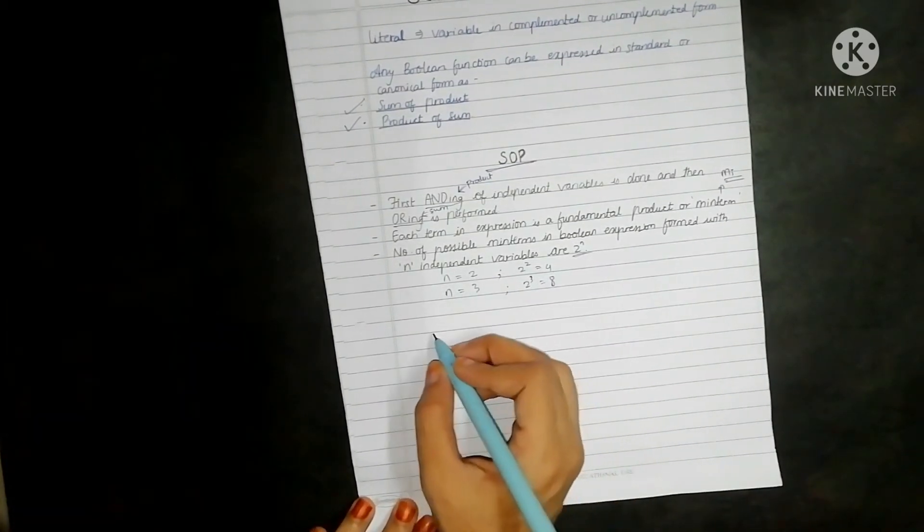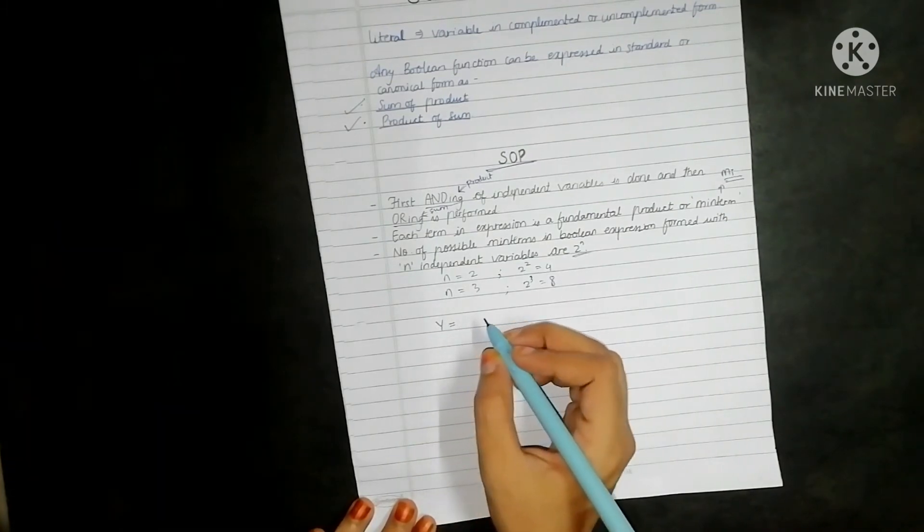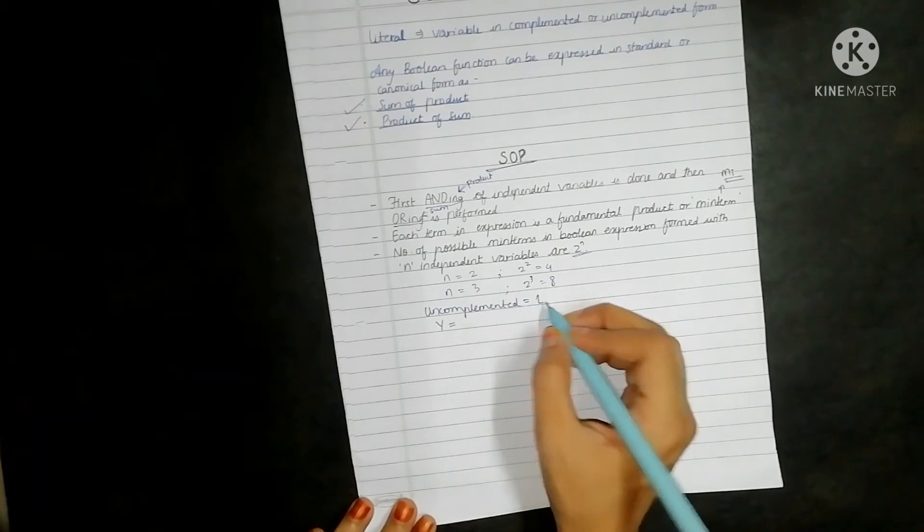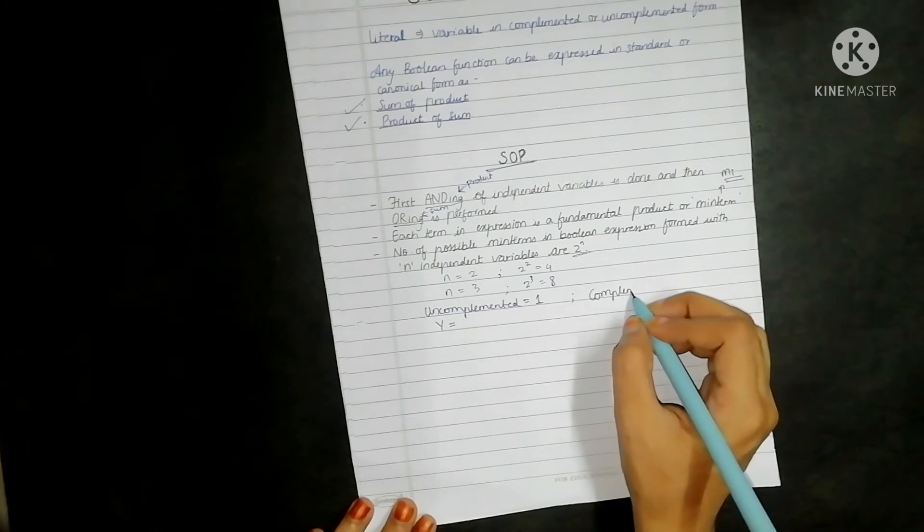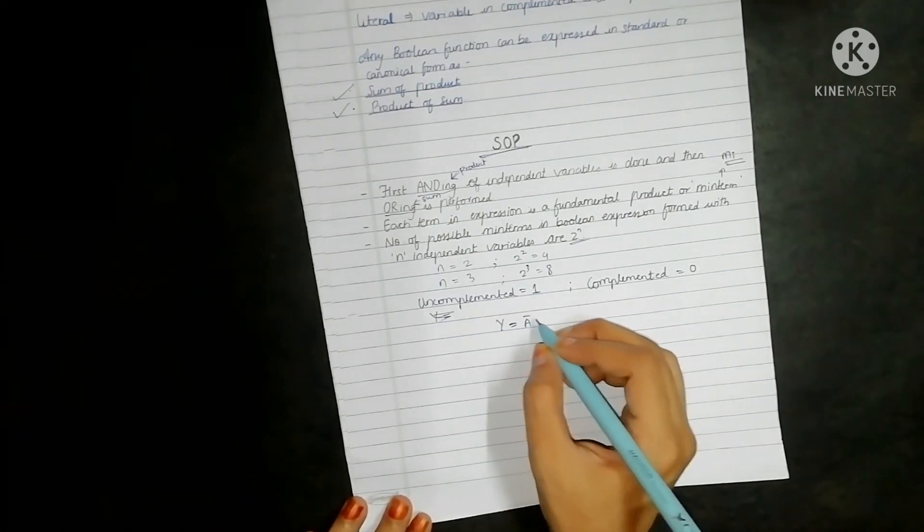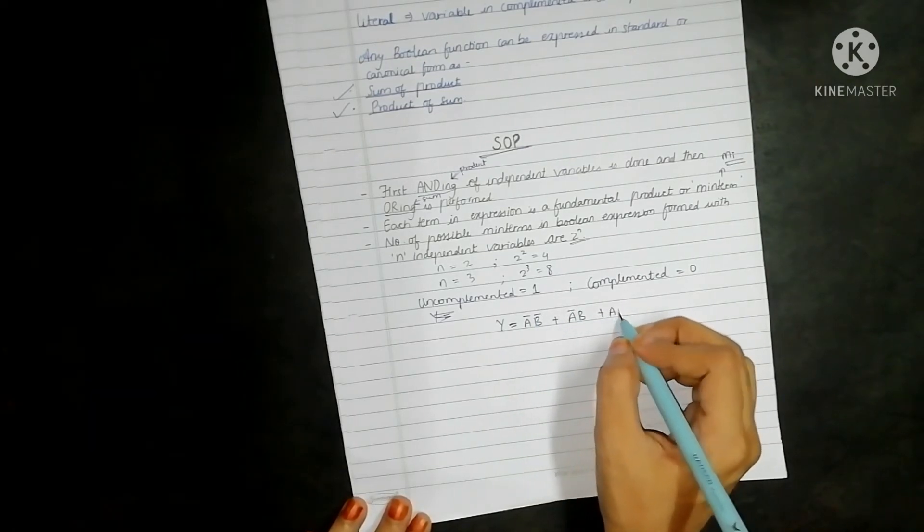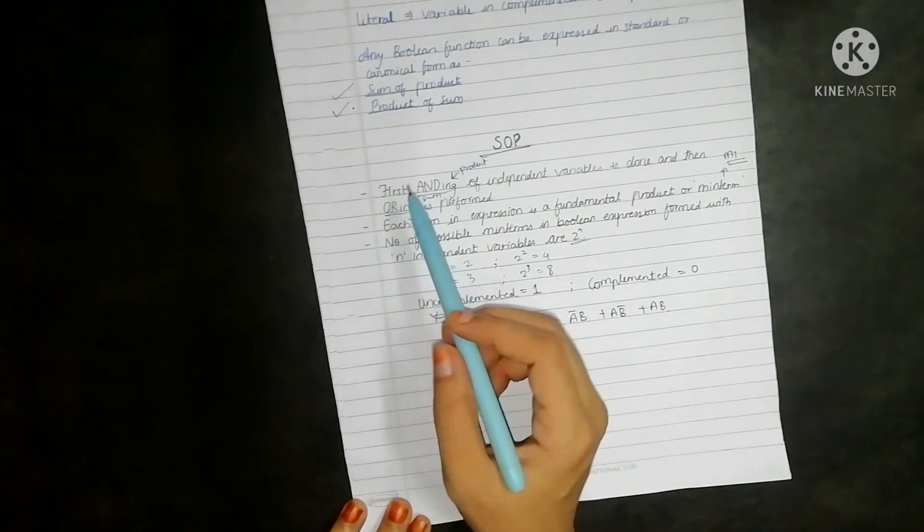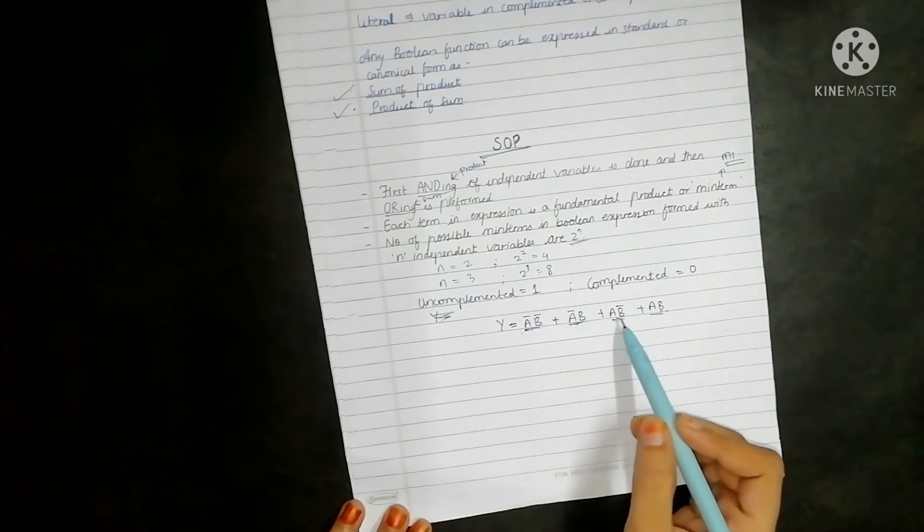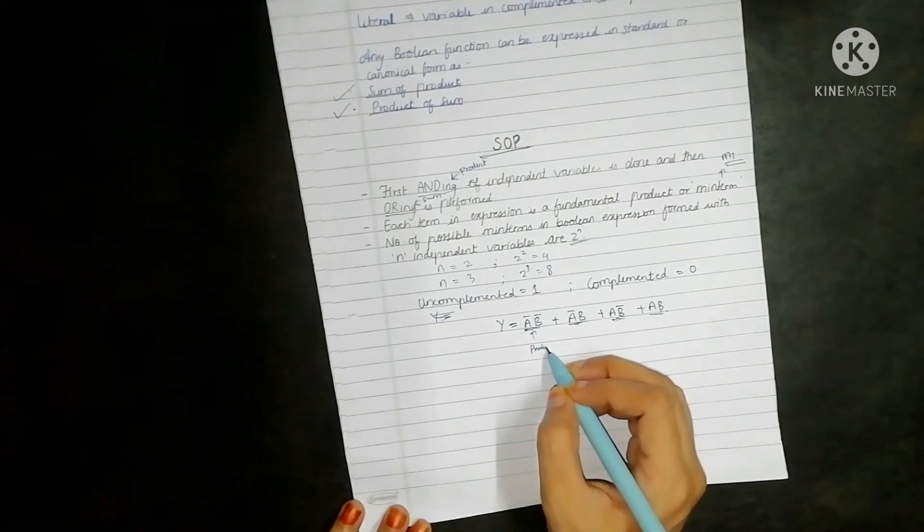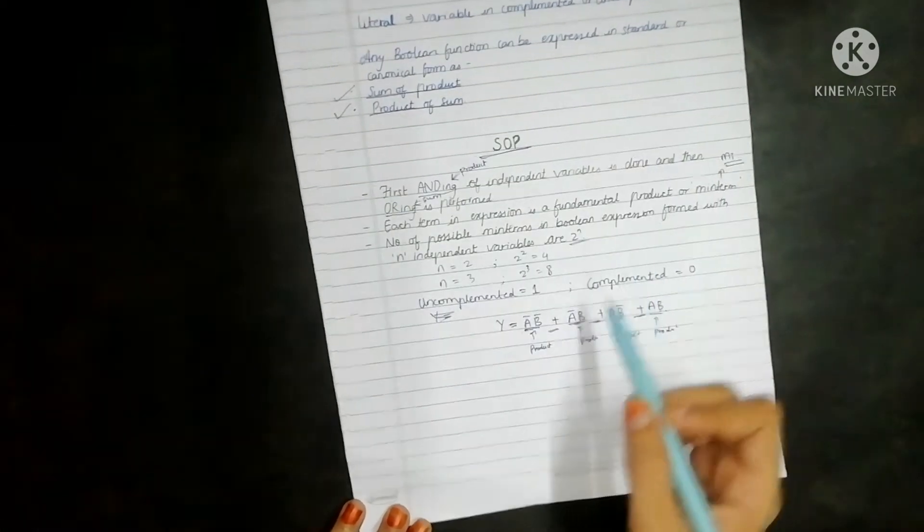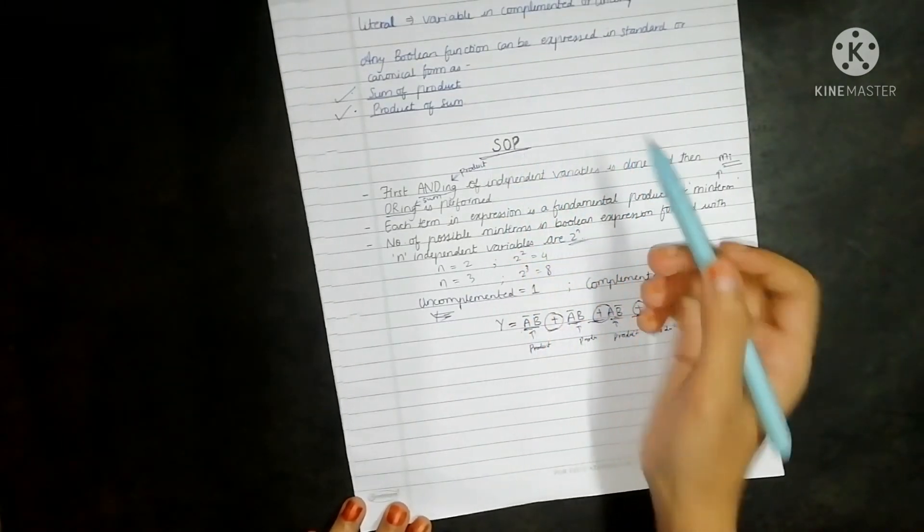Let's take an equation of two variables. Also one important point is in this form we have the uncomplemented variable as one and we take the complemented one to be 0. Let's say I have the expression y equals a bar b bar plus a bar b plus a b bar plus a b. Now see the first statement: first ending of independent variables is done and then oring is performed. This is product, product, product and product, and we are taking the sum of the products, thus the name sum of products or SOP.